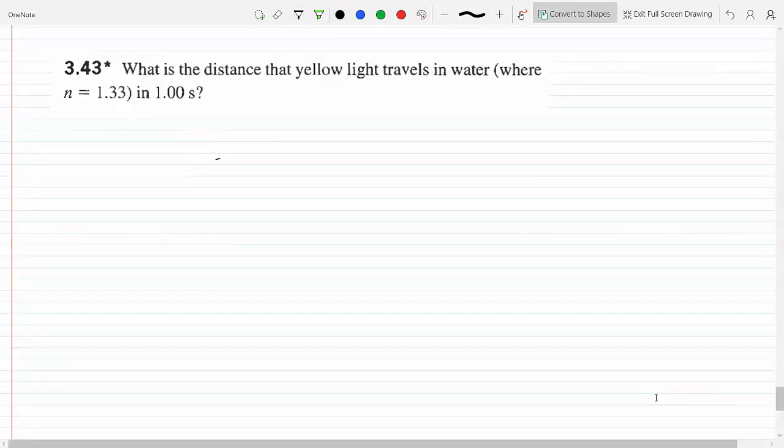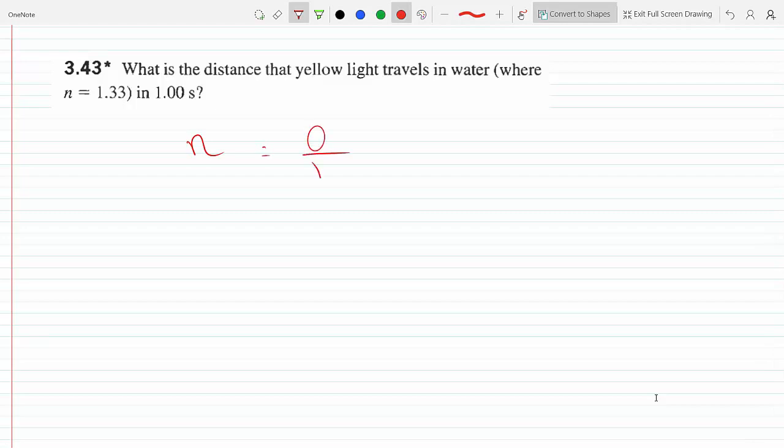We know that n, the index of refraction of the medium, is C over V, or V is C over n. So the velocity is C over n.